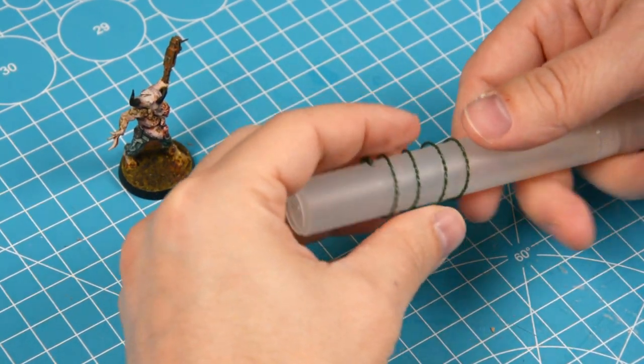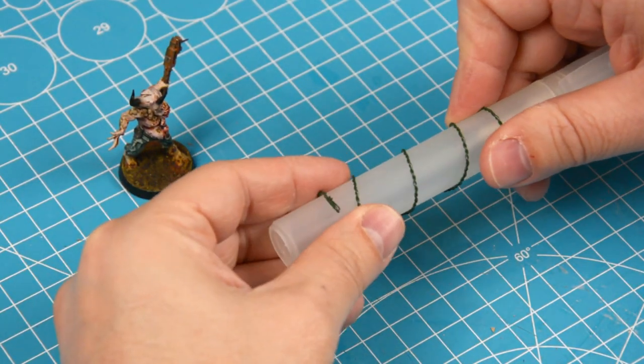It's easy enough to adjust the size, even though it actually holds its shape quite well once you've made the loops.